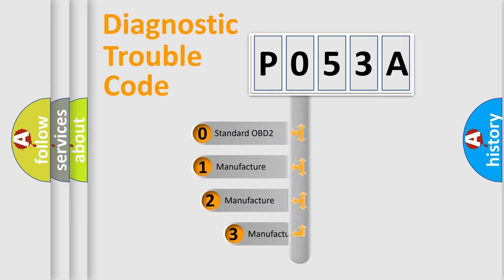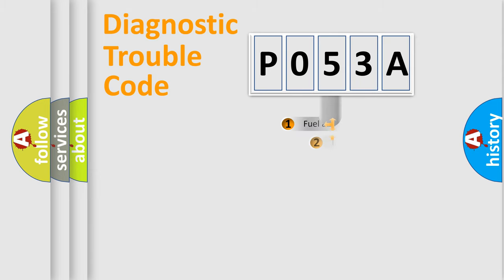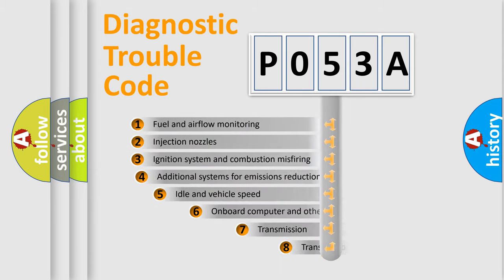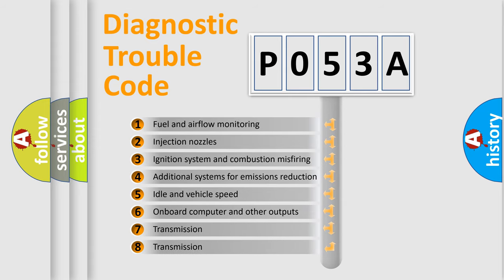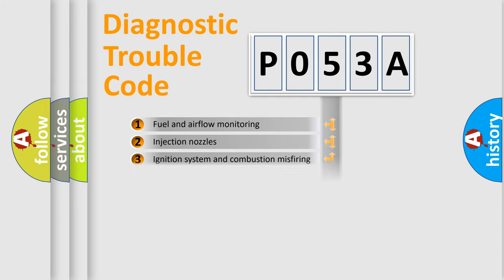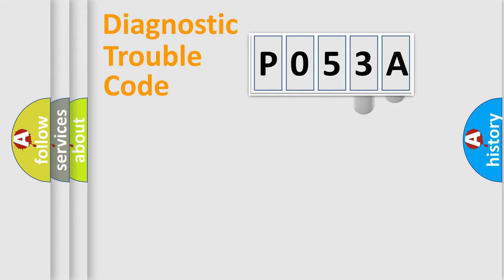If the second character is expressed as zero, it is a standardized error. In the case of numbers 1, 2, 3, it is a more prestigious expression of the car-specific error. The third character specifies a subset of errors. The distribution shown is valid only for the standardized DTC code.